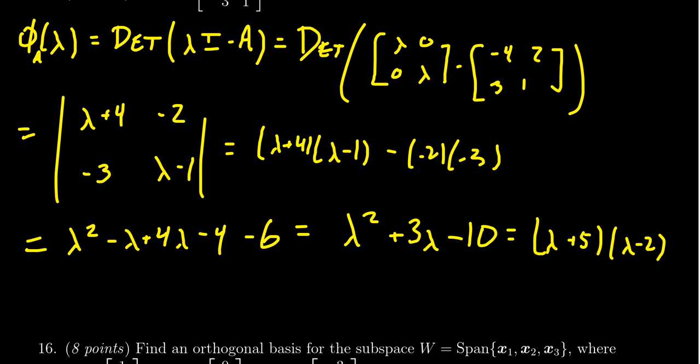Let's verify that just so you're sure: 5 times -2 is -10, and 5 + (-2) is 3. That is the correct factorization, for which we see our eigenvalues are λ = -5 and λ = 2.